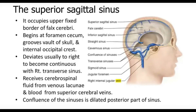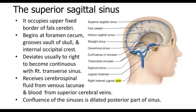It occupies a fixed border of the falx cerebri, begins at the foramen cecum anteriorly, and grooves the vault of the skull. Wherever these sinuses are running along the bones, they produce grooves on the bones because of pressure. The superior sagittal sinus makes a groove on the under surface of the skull.